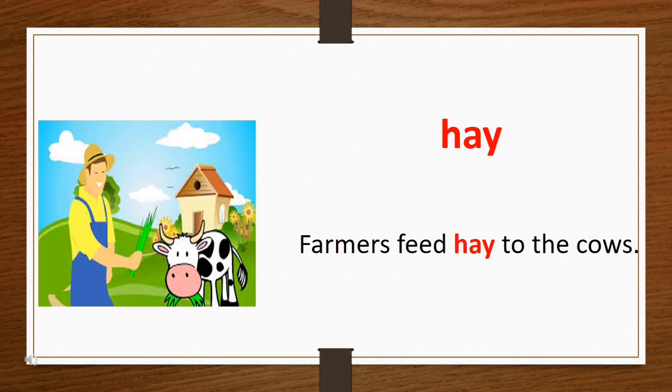The next word is 'hay.' Hay is the grass that is cut and dried and used as animal food. Now let's see the sentence: Farmers feed hay to the cows.